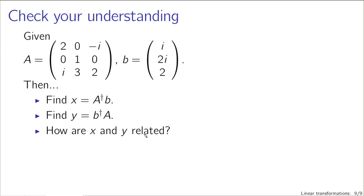To check your understanding: given a matrix and a vector, calculate the Hermitian conjugate of A applied to B, and then the Hermitian conjugate of B left-multiplied by the matrix. The final question is to figure out how X and Y are related to each other — just to get you back in the swing of doing matrix operations and figuring out how matrix-vector products look.